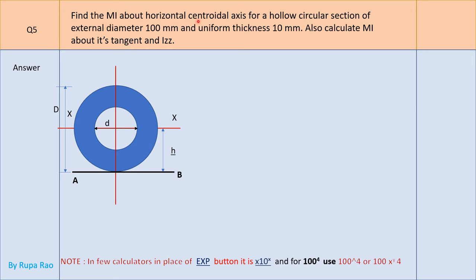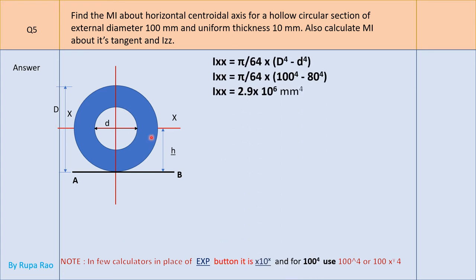Next problem: find MI about horizontal centroidal axis for a hollow circular section of external diameter D = 100 mm and uniform thickness 10 mm. Also calculate MI about its tangent and Izz. The axis XX is at D/2 = 50 mm from the base. Small d = 100 − 10 − 10 = 80 mm. The formula for Ixx = π/64 × (D⁴ − d⁴).